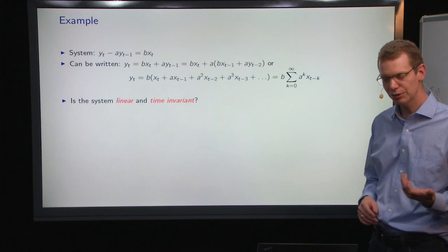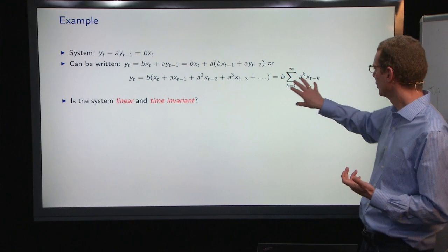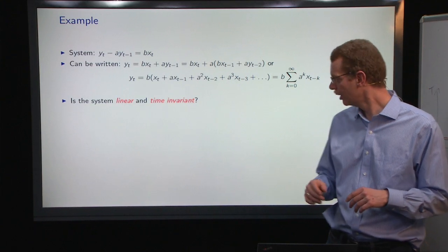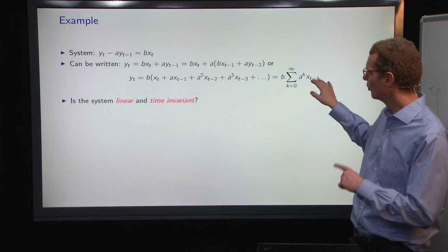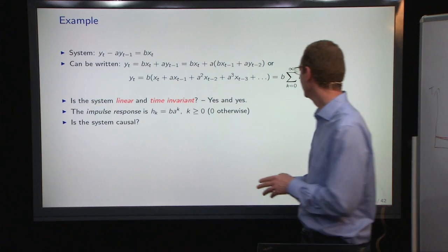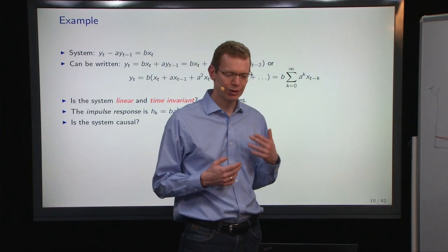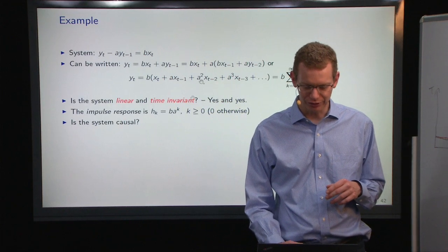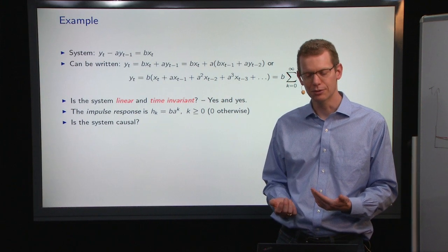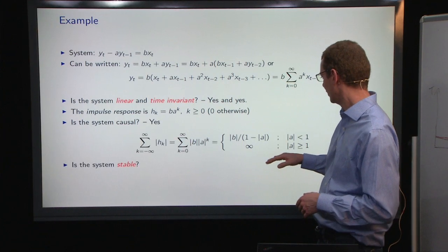First of all, is this linear in the input? Yes, it is, because we just have some weights on the previous things here, and those weights are just linear, so we can take sums of those, it works fine. Time invariant? Yes, if we shift time, it works everywhere. So the impulse response here is then b times a to the k power, and zero when k is negative. So does that mean the system is causal? Yes, it does, because it equals zero when it's negative.